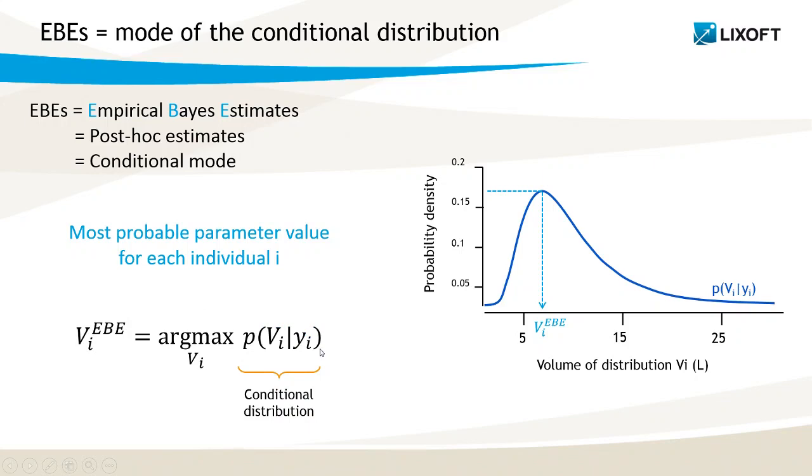As a reminder, the conditional distribution represents the uncertainty distribution of the individual parameters given the individual data Yi and given the population parameters, which are omitted from this equation for clarity. Actually, I have several parameters, for instance Ka, V and Cl, so I will write them psi i with psi a vector.